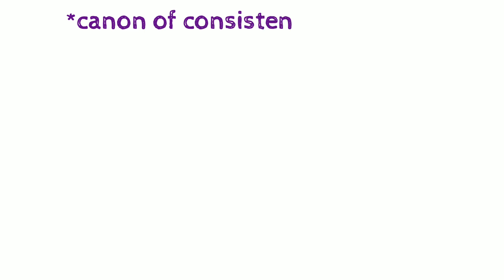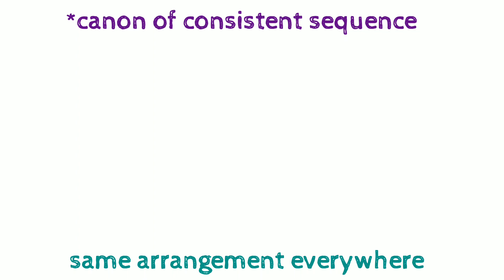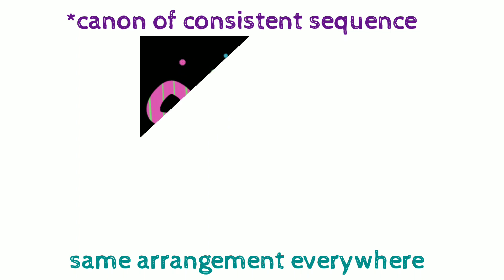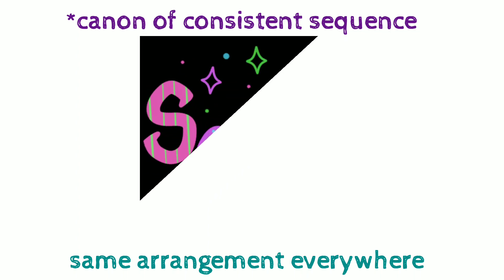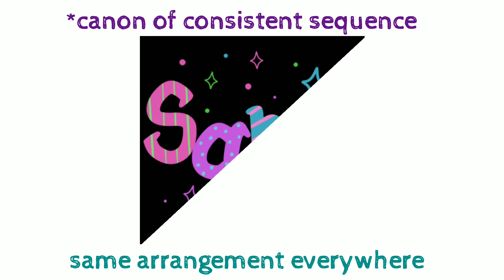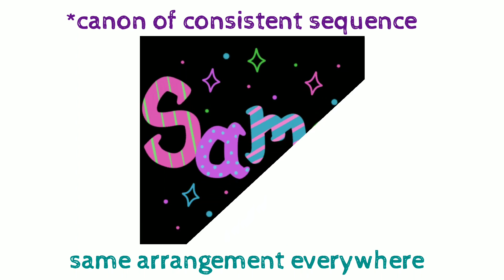The last canon in this series is the canon of consistent sequence. Consistent sequence means that if there is one entity, you have added it in one array, so each entity every time you prepare the array should be in the same arrangement. Each entity should be in the same array arrangement everywhere.